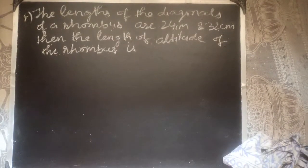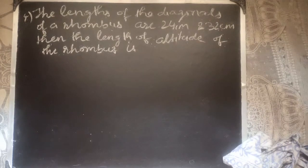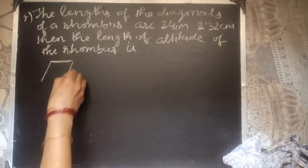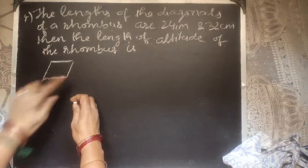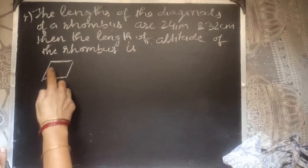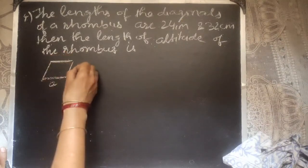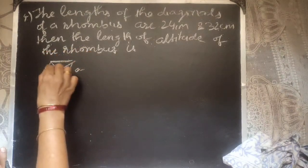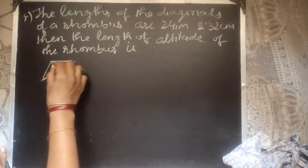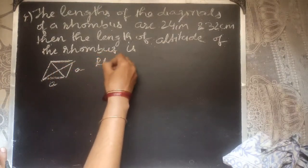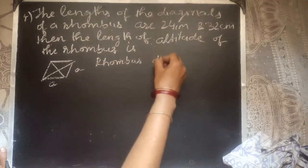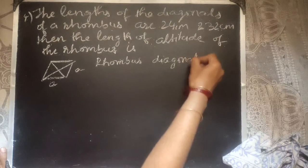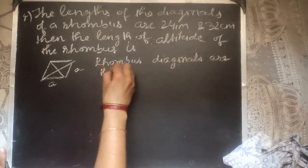The lengths of the diagonals of a rhombus are 24 cm and 32 cm — find the length of the altitude. Altitude means the height of the rhombus. A rhombus is a parallelogram where all sides are equal. For a rhombus, the diagonals are perpendicular bisectors of each other, so the diagonals bisect each other at 90°.